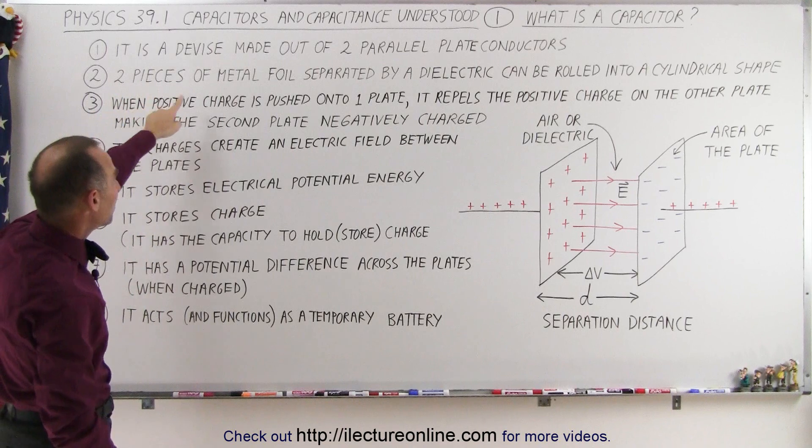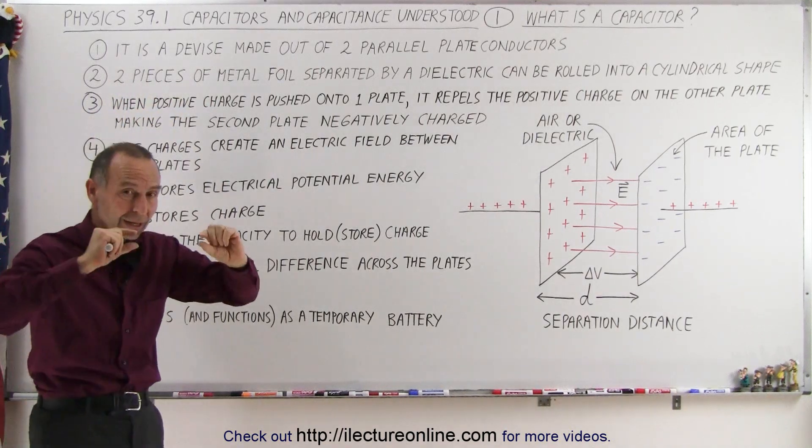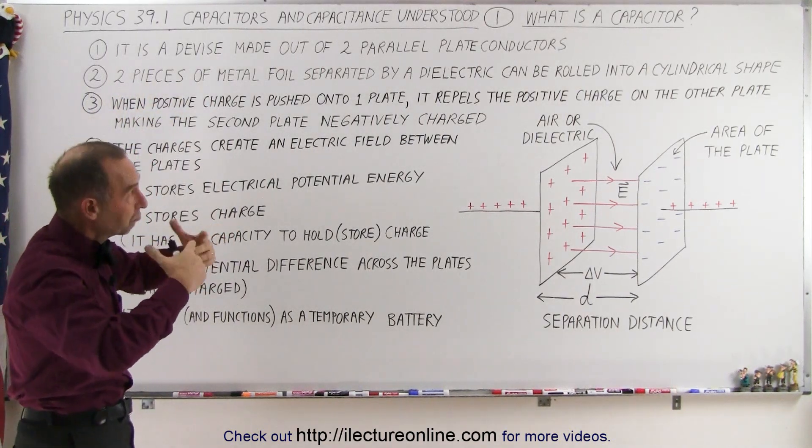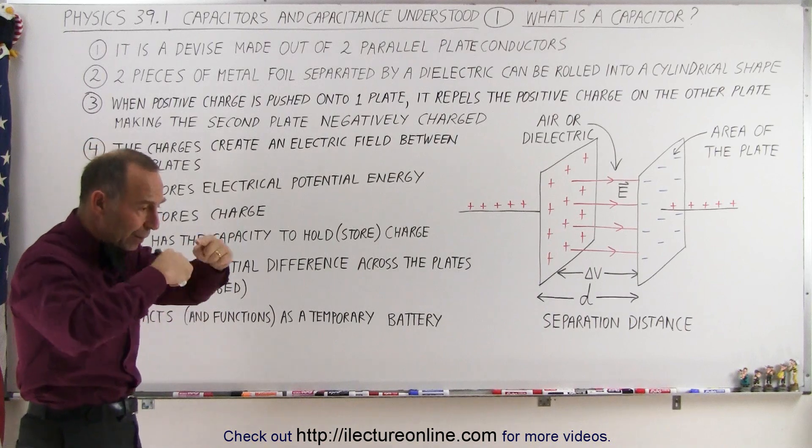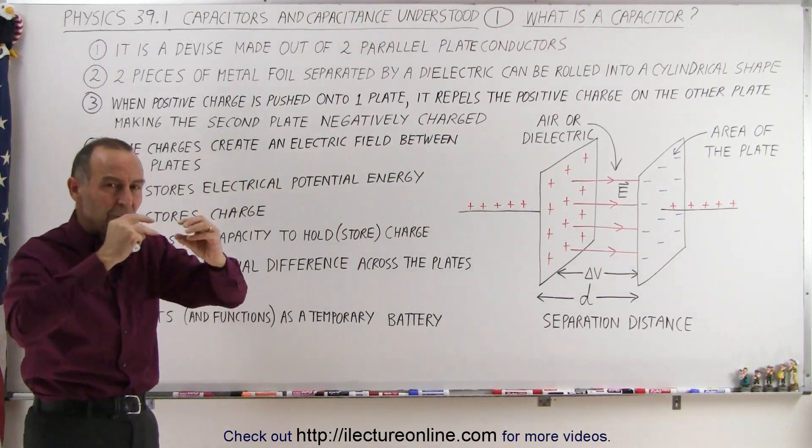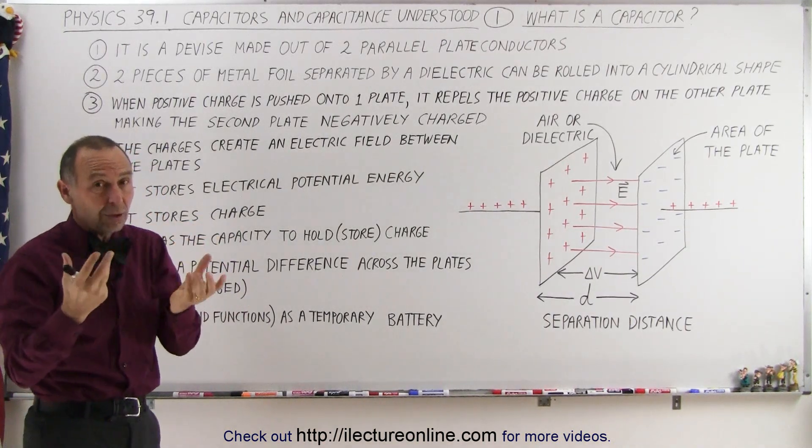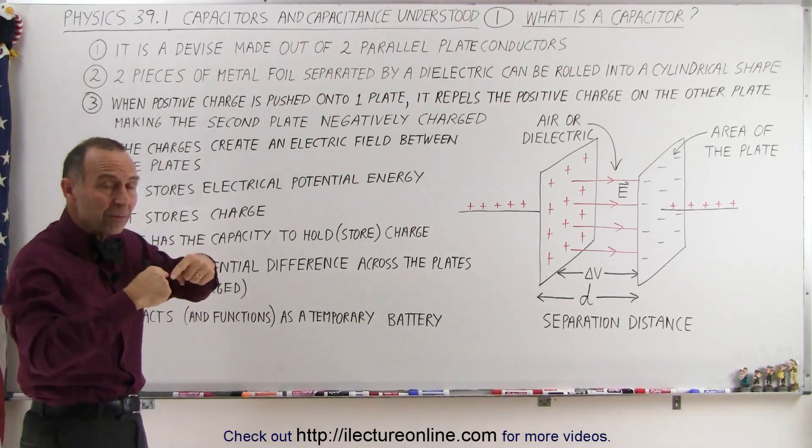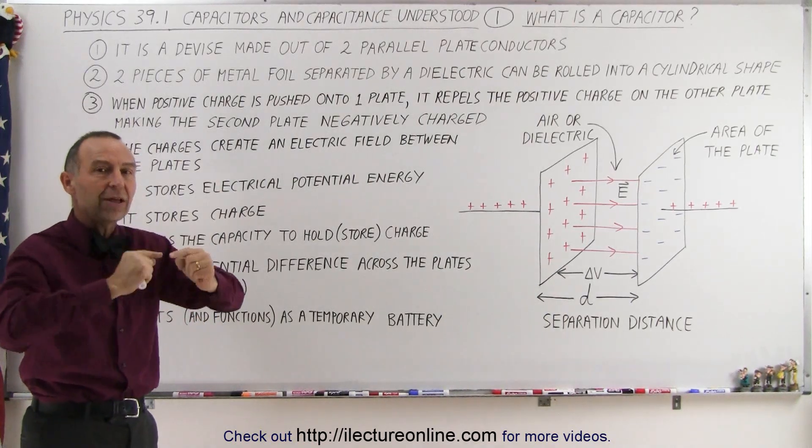What we can do is we can take two pieces of metal foil separated by an insulator or what we call a dielectric, and we can roll that into a cylindrical shape. So that's how you most often see capacitors. They tend to be cylindrically shaped because that's how they're constructed.